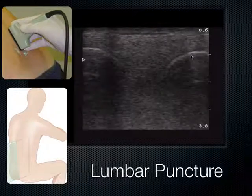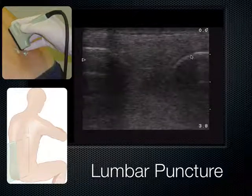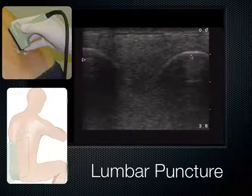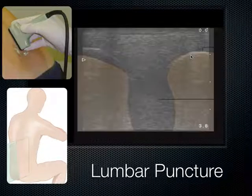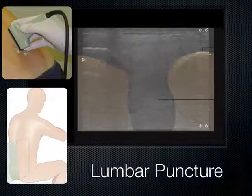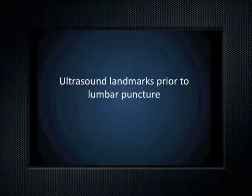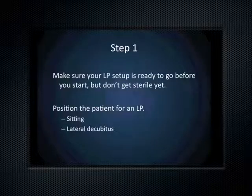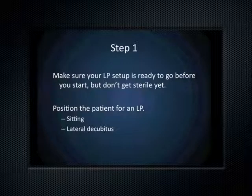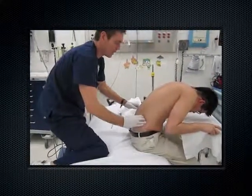My fellow from last year, Connie Chan, created a nice video showing the vertebral spinous processes. The purpose of this video is to demonstrate how to use ultrasound to find landmarks prior to lumbar puncture. After viewing this video, you'll have a chance to practice in a hands-on session. Before you start, make sure your LP tray is ready to go, because once you find your interspinous space using ultrasound you want to start the LP right away. Position the patient whether in the sitting position or lateral decubitus position.